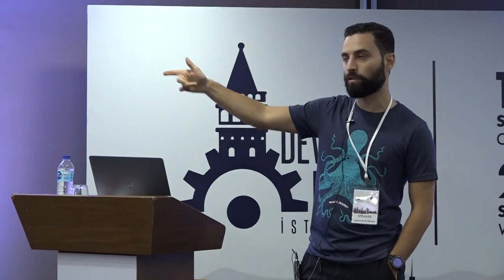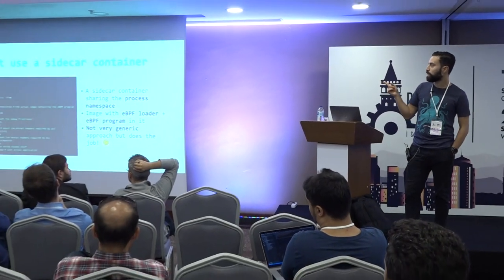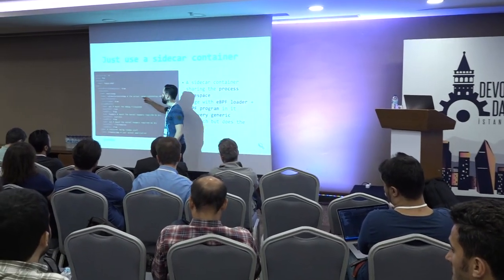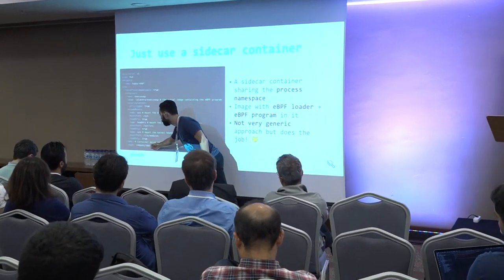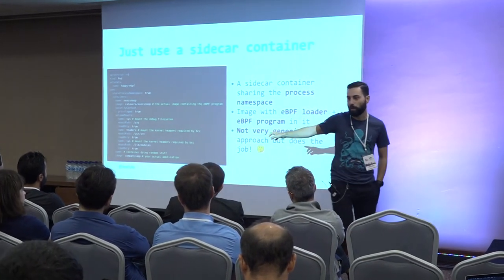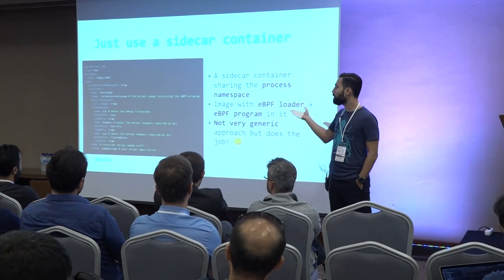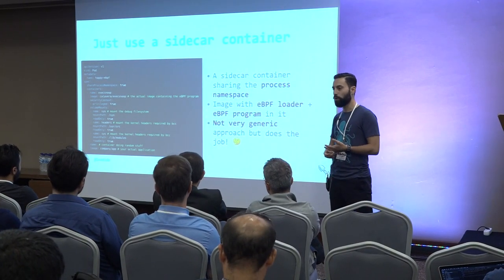Let's start simple. There's a Docker image — 'calavera/execsnoop' — containing an eBPF loader for an eBPF program which basically tracks the execution of an exec syscall. If you want to deploy this on Kubernetes, you can do it. The important thing is to share the process namespace so that this container can have the same namespace as the companion app — the app that you want to monitor. Clearly you also have to share the kernel headers for eBPFs. This is the simplest approach you can use to deploy an eBPF on Kubernetes.